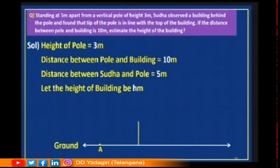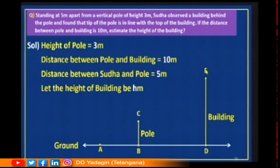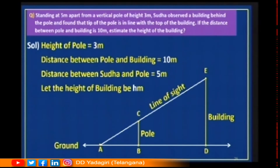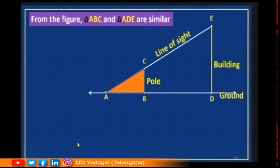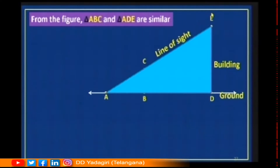I am taking the ground and a point A as the point of observation from where Sudha is observing. BC is the pole. DE is the building. Sudha is observing from A such that the top of the pole C and the top of the building E are in a line — this is the line of sight. We have to find the height of the building.